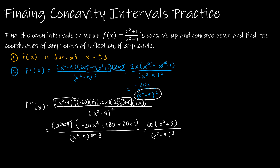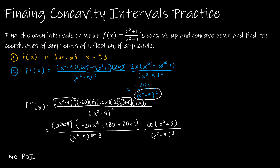That is my second derivative. To find where it equals zero, I only need the numerator: when does 60 times x squared plus 3 equal zero? Dividing by 60 gives x squared plus 3 equals zero, or x squared equals negative 3, which produces an imaginary number. So there are no real points of inflection. However, I still need to find the intervals, which are negative infinity to negative 3, negative 3 to positive 3, and positive 3 to infinity.